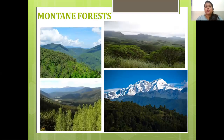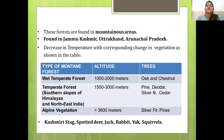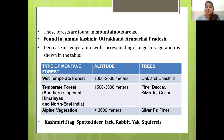Montane forests are found in mountainous areas, generally in Jammu and Kashmir, Uttarakhand and Arunachal Pradesh. As temperature decreases with altitude, the kind of vegetation also changes. In wet temperate forests, trees like oak and chestnut are found. On the southern slopes of the Himalayas, pine, deodar and silver fir are found. In alpine vegetation, silver fir and pines are common. Animals here include Kashmiri stag, spotted deer, jack rabbit, yak and squirrels.